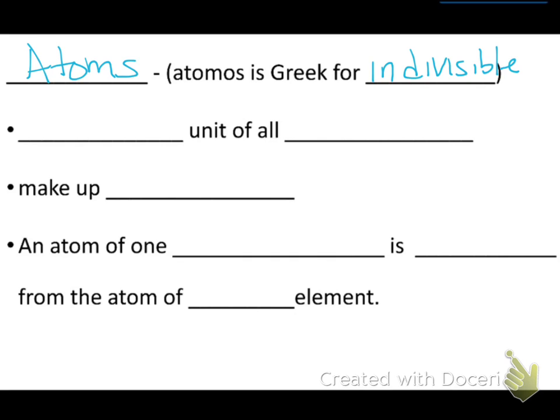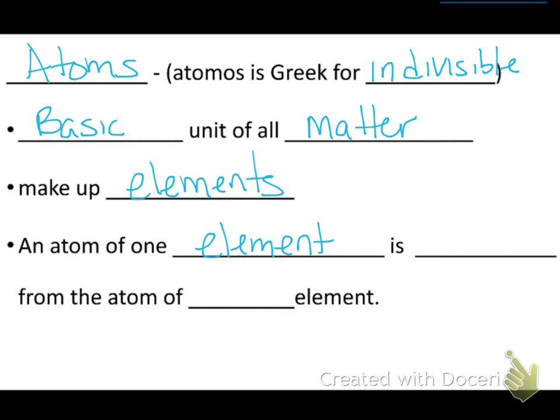Atoms are the basic unit of all matter. The atoms make up elements. An atom of one element is different from the atom of another element. So, all atoms are not the same.